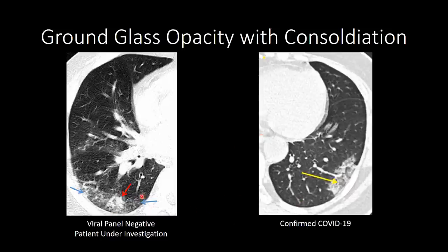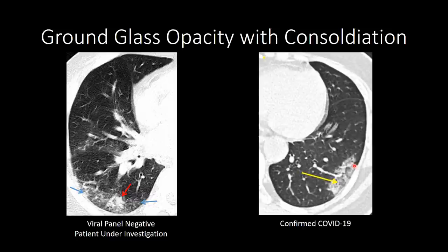When you see ground glass opacities with superimposed consolidation, we can see in a patient under investigation an area of peripheral ground glass opacification with a more focal area of consolidation superimposed. This is a case of confirmed COVID-19 where the patient has a peripheral area of consolidation, though some areas of ground glass opacification remain within the more consolidative airspace opacities.